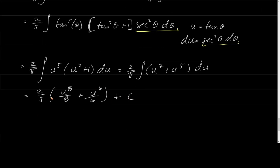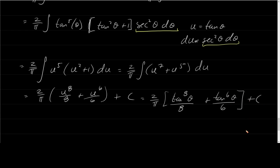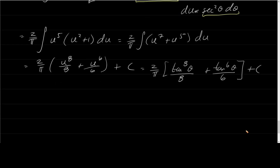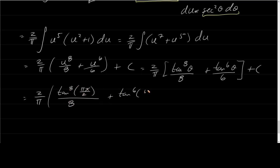Substituting back u equals tan theta, then theta equals πx/2, the final answer is 2 over π times (tangent to the eighth of πx/2 over eight plus tangent to the sixth of πx/2 over six), plus C.